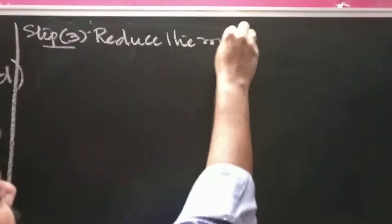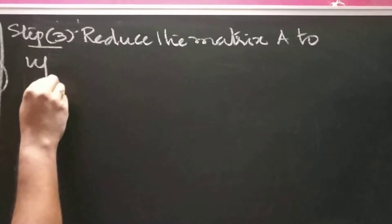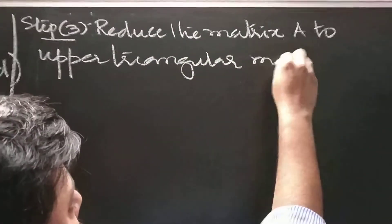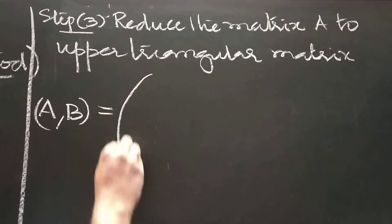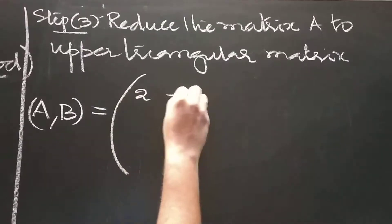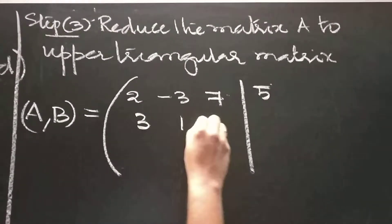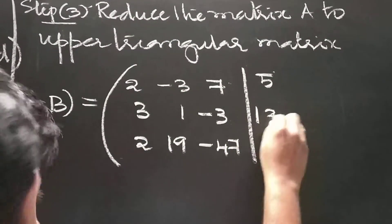Step number 3: reduce the matrix A to upper triangular matrix. The augmented matrix [A|B] is [2, -3, 7, 5; 3, 1, -3, 13; 2, 19, -47, 32].